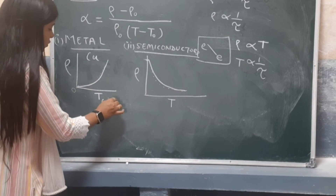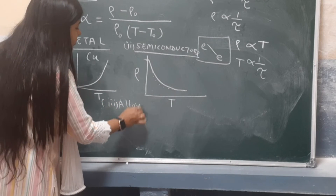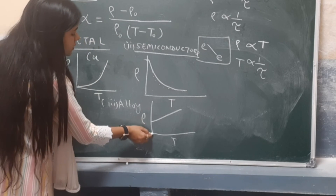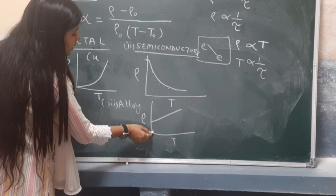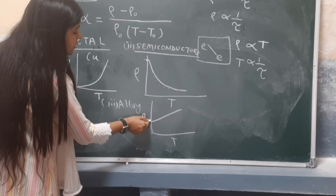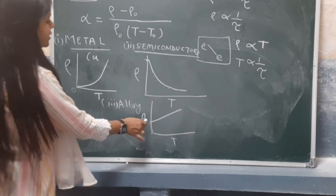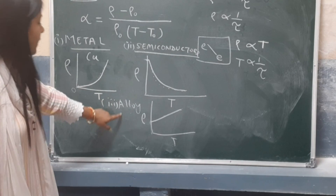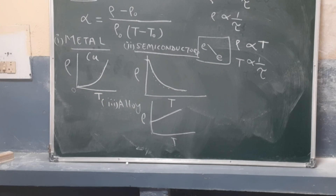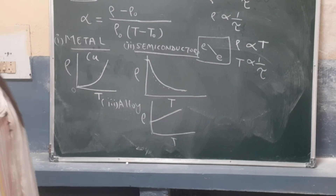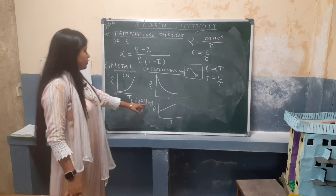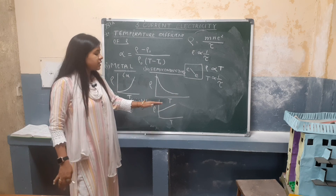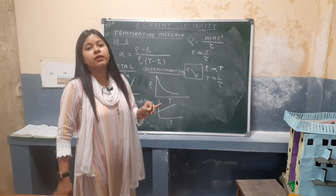For alloys, the resistivity-temperature graph starts from a certain nonzero value even at low temperature, and as temperature increases, resistivity increases accordingly but very slowly. This is the reason we use alloys for making standard resistors — because their resistivity value increases only after a certain temperature, remaining stable at lower temperatures.